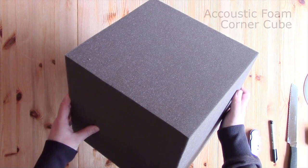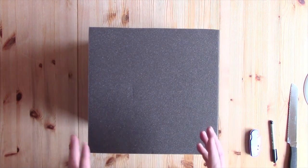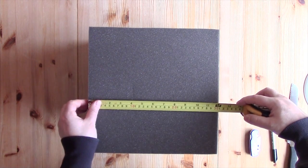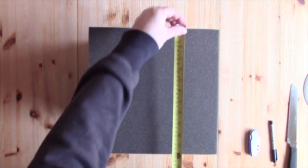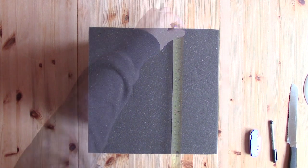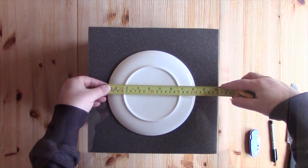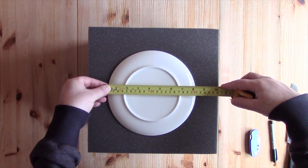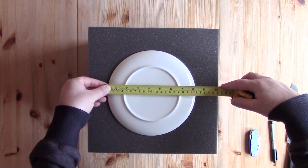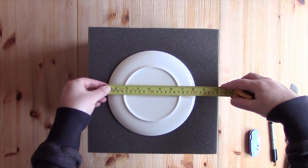What we have here is an acoustic foam corner cube, equal on all sides. This cost 11 pounds in the UK including shipping. It's a 12 inch cube, so 12 by 12 by 12. Now what we're going to want is a small plate. This plate measures 21 centimeters or just over 8 inches, and this is going to be our opening.